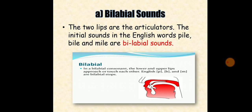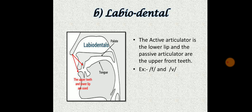Consonants can be described according to their places of articulation. For example, bilabial sounds: in these sounds, the two lips are the articulators. The initial sounds in the English words pile, bile, mile are bilabial sounds. In labiodental sounds, the active articulator is the lower lip and the passive articulators are the upper front teeth. For example, the initial sounds in the English words fine and vine are labiodental sounds.